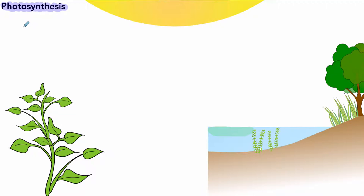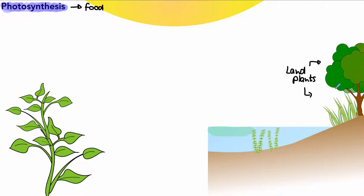To start off with, we can look at the word itself, which is broken down into 'photo' and 'synthesis.' Photo means light and synthesis means to make — what the plant is making is food. Photosynthesis is linked to plants, and by plants we're talking about all the different kinds: land plants like trees, and plants found in water that carry out the same process.